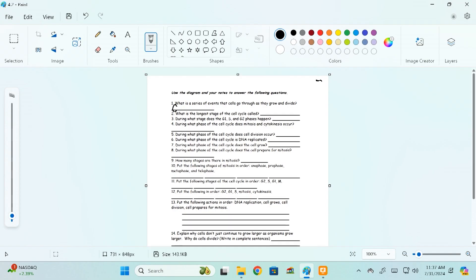What is a series of events that cells go through as they grow and divide? So what's kind of the overall name of this unit? What have we been talking about? Well, this is known as the cell cycle. Cell cycle is how a cell lives its life and what it's doing in order to divide correctly.